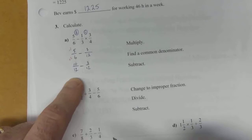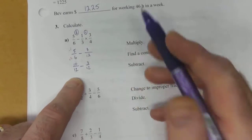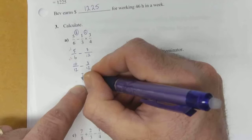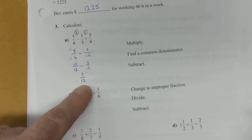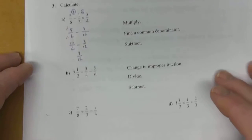So now that's what we're working with. 10 over 12 minus 3 over 12. Well, 10 minus 3 becomes 7 and the denominator doesn't change. So 7 over 12. And that's our solution there. That can't be reduced any further.